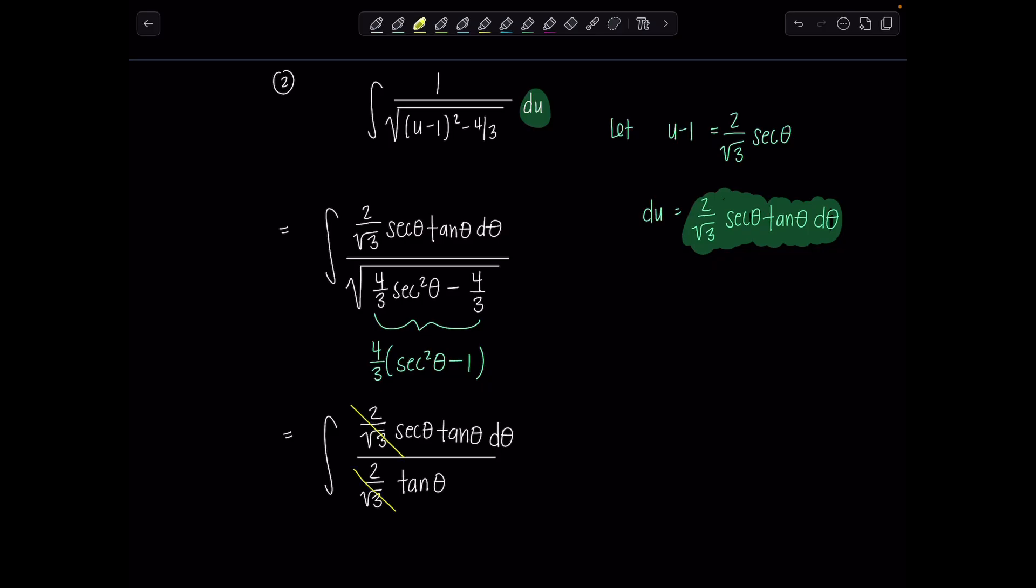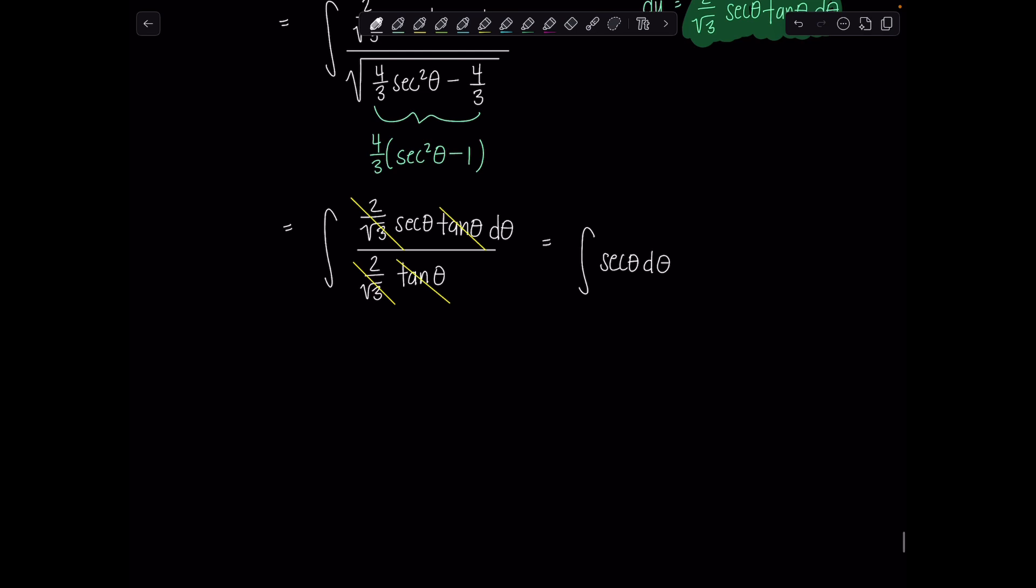And then we still have 2 over rad 3 secant theta tan theta d theta up top. 2 over rad 3 cancels, and then tan theta is gone. And then I just have integral secant theta d theta. This is one you should memorize because deriving this antiderivative is not very intuitive. So ln absolute value secant theta plus tan theta plus c2.